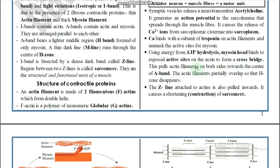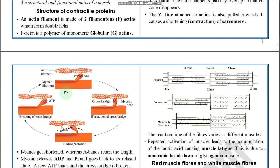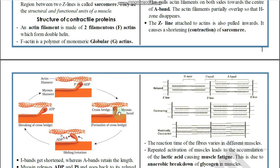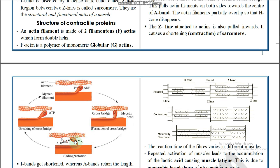This cross-bridge formation pulls actin filaments on both sides towards the center of the A band. The actin filaments partially overlap so that the H zone disappears. As seen in the diagram, the myosin head attaches to the actin filament after ATP hydrolysis, cross-bridge formation takes place, and the myosin head pushes the actin filament towards the H zone.